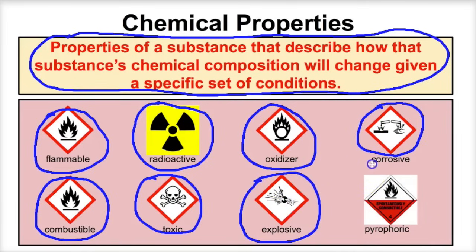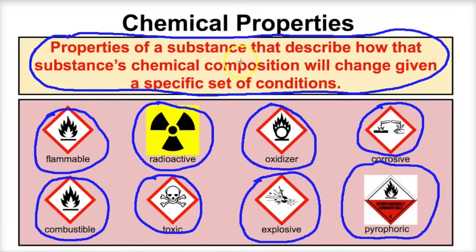And last but not least, if we said that something is pyrophoric, that means that substance has the ability to ignite when exposed to air — so that will be a chemical property as well. So chemical properties are properties of a substance that describe how that substance's chemical composition will change given a specific set of conditions.